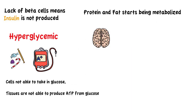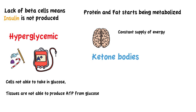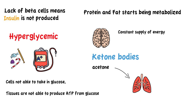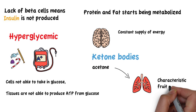The brain needs a constant supply of energy for normal functioning. Through the metabolism of fatty acids, ketone bodies such as acetone are produced, which will provide the brain with energy. Acetone is excreted from the body through the lungs, which gives type 1 diabetic patients the characteristic fruity-smelling breath.